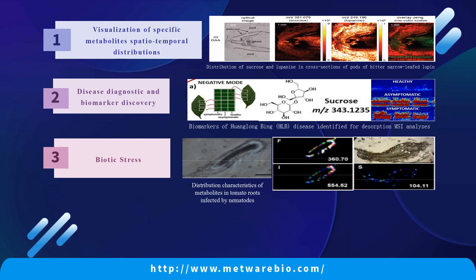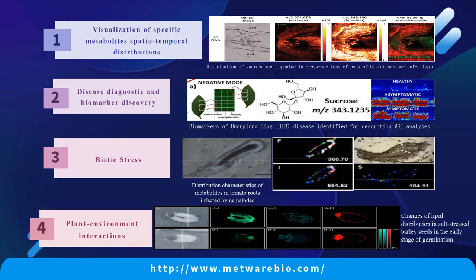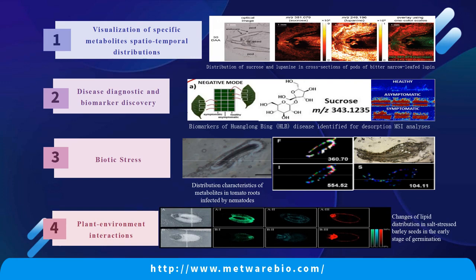Spatially resolved metabolomics can also be applied to abiotic stresses. The article on the right uses spatially resolved metabolomics to analyze changes in the spatial distribution of metabolites and lipids in plants under high salt stress, in order to understand how to improve salt stress resistance during seed germination. As can be seen, spatially resolved metabolomics is widely used in plants, including biotic stress, abiotic stress, accumulation of specific substances, and screening biomarkers for disease.